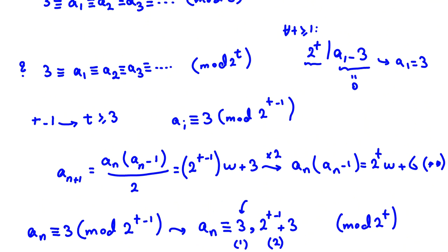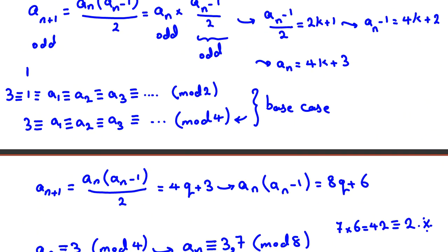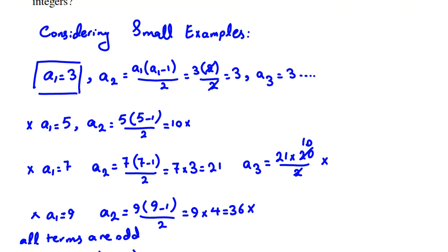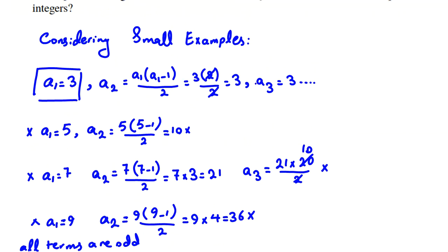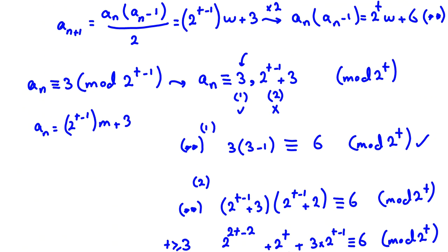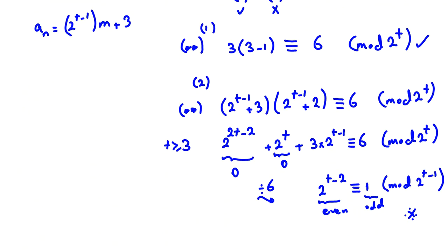So we've proved that all terms must be congruent to 3 mod 2^t. Therefore a1 has to be 3. For a1 equal to 3, we've checked it works. For all other values, we've proved it does not work. We've solved the problem completely by considering small examples. There are many problems that can be solved with this idea.